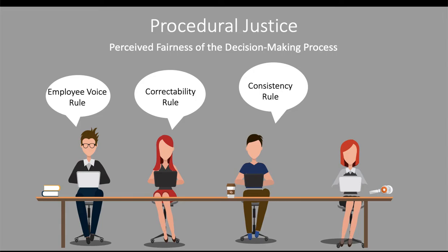The consistency rule says we will be consistent in how we carry out our decision-making process and apply those consistent rules and standards to every person regardless of who they are. For example, in a class, assignments are graded using a rubric applied to every single student. If a rubric were used for some students but not others, that would violate the consistency rule and make the grading process look unfair. We have to apply the same standards across all employees or situations.